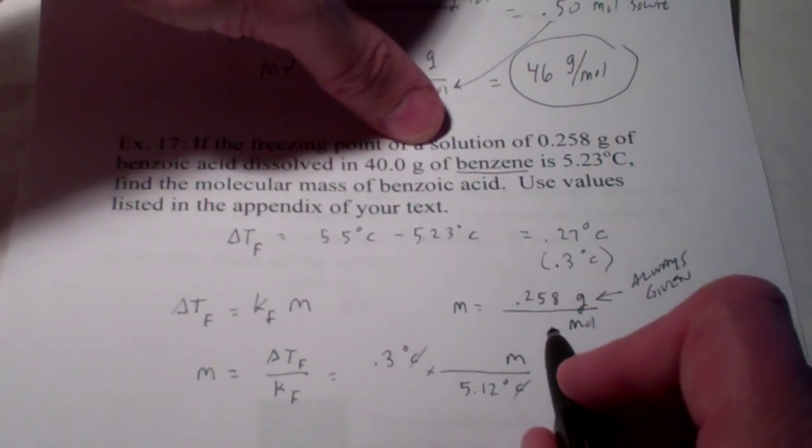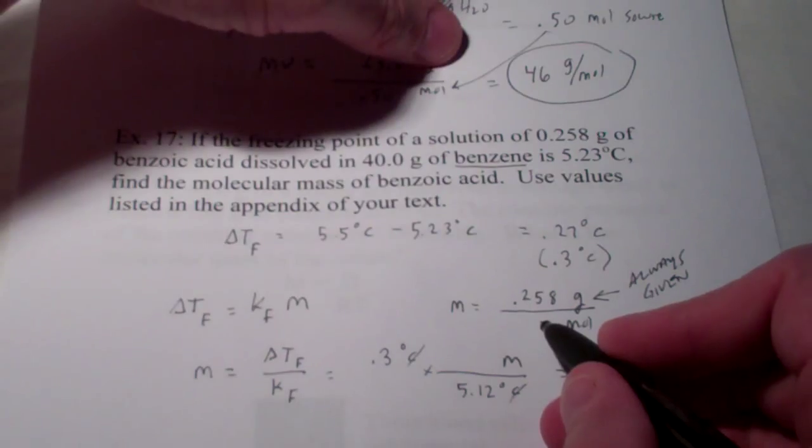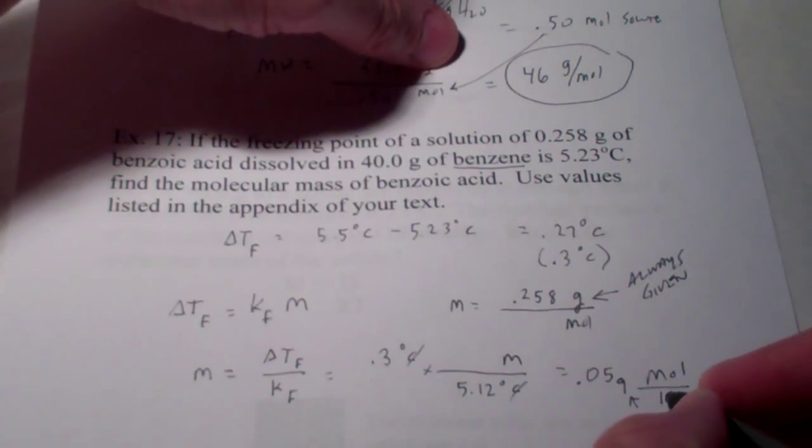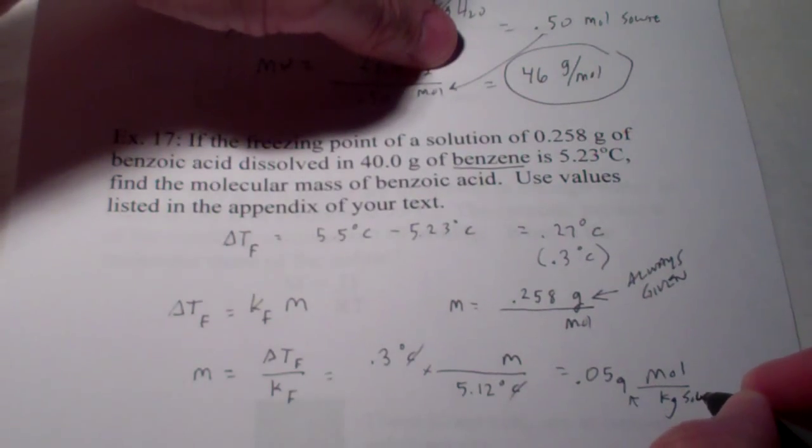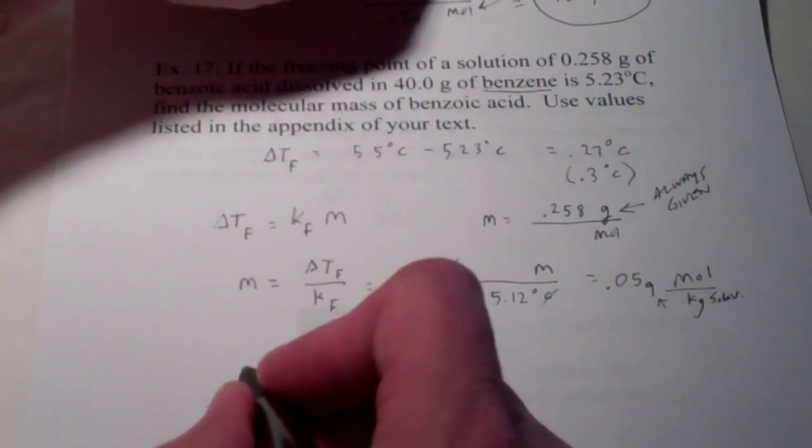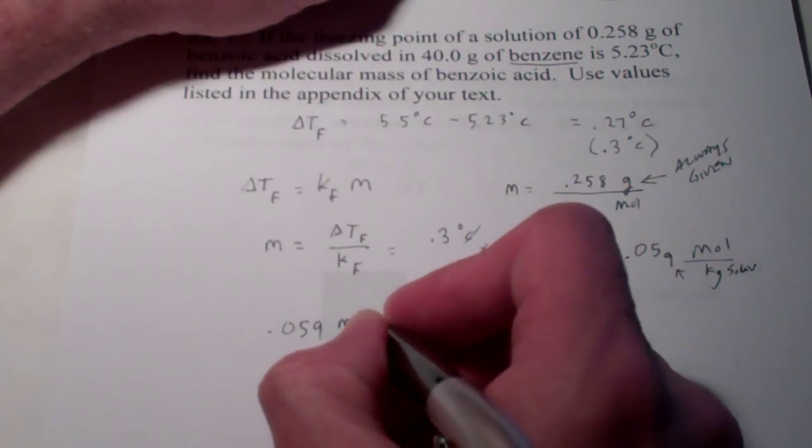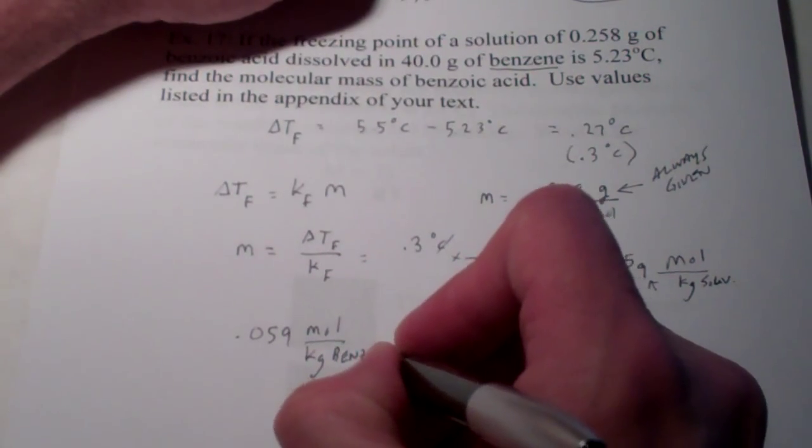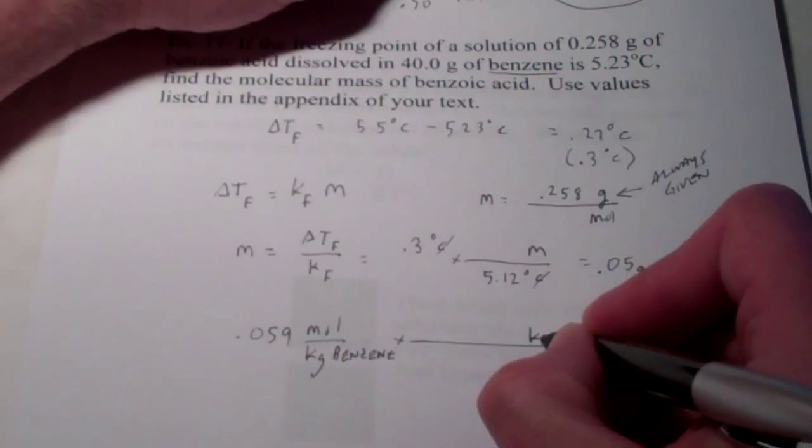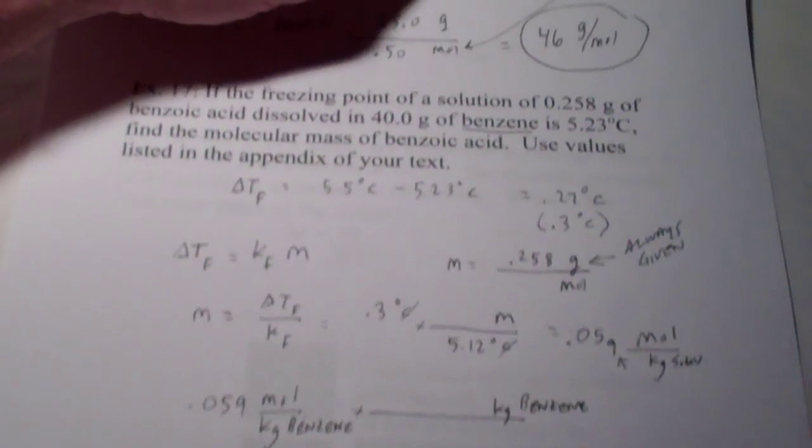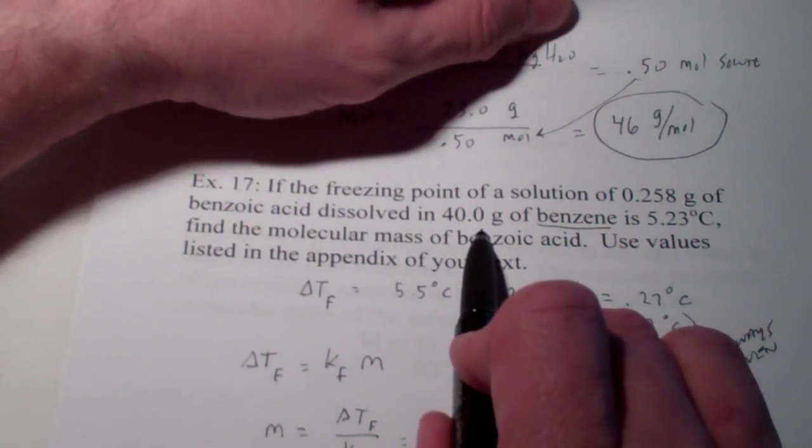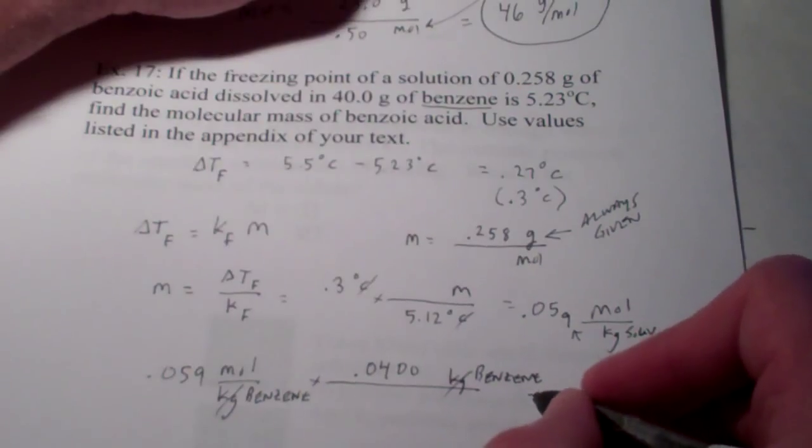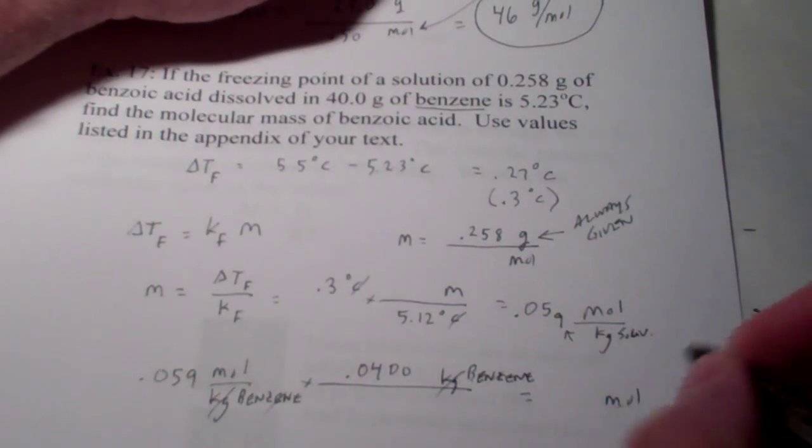Now, that is not the number of moles. Some kids will make a mistake and put the molality over here for the number of moles. That's not true. Remember, molality is actually moles of solute per kilogram of solvent. So, we have to get rid of kilograms of solvent. So, let's work down here. We have 0.059 moles of solute per kilogram of solvent. Now, my solvent, remember, if you read the problem, is benzene. So, let's get out of kilograms of benzene. And we'll see that we have 40.0 grams of benzene, which, of course, is 0.0400 kilograms. Kilograms divide out of benzene and we have moles of solute here.